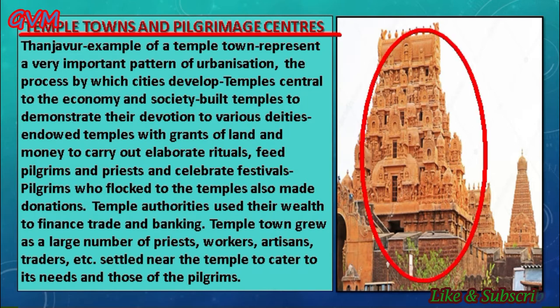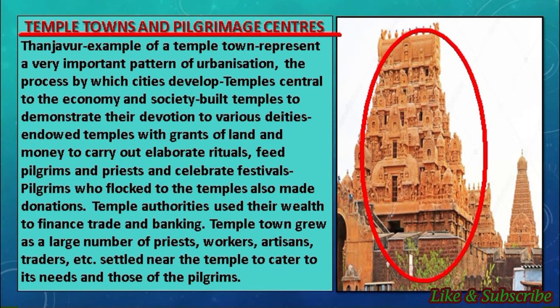Urbanization — the process by which cities grow — happened as temples became central to society and economy. That is why Thanjavur is also an example of a temple town. Temples were built by rulers not only to show their devotion but also to unify different communities. They were maintained through cash and land grants from rulers and merchants, as well as donations made by pilgrims.